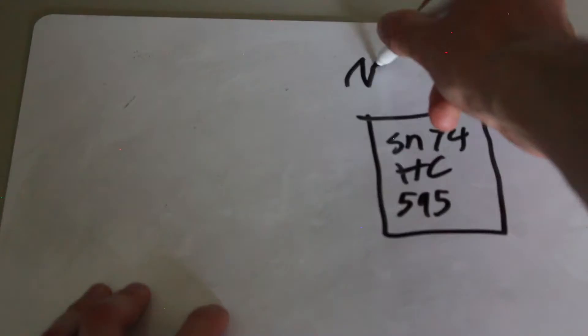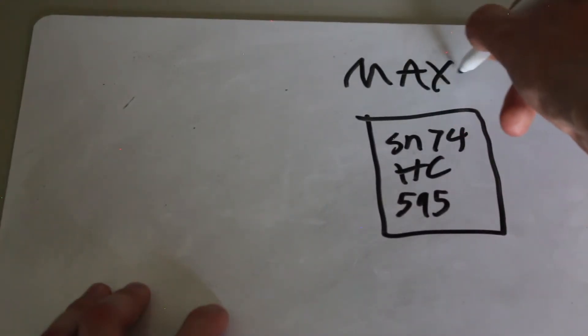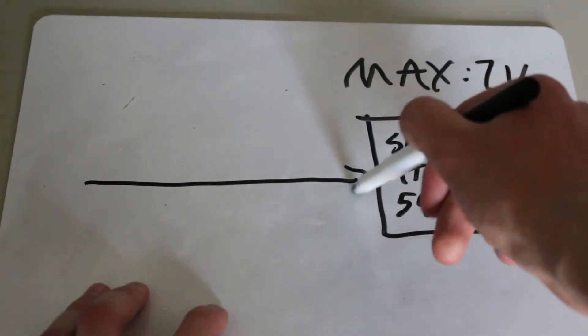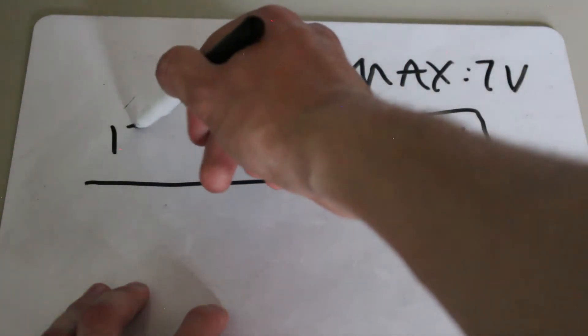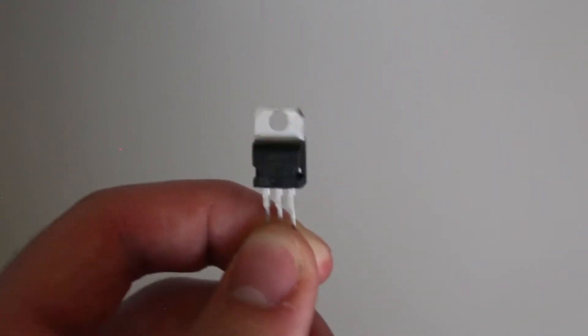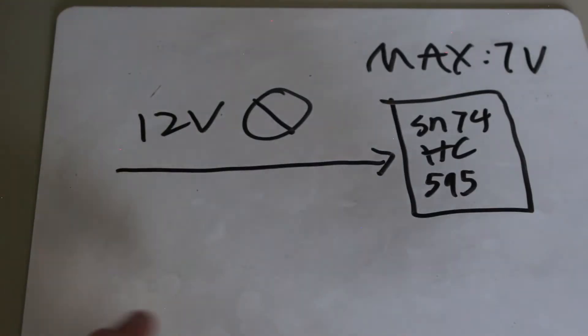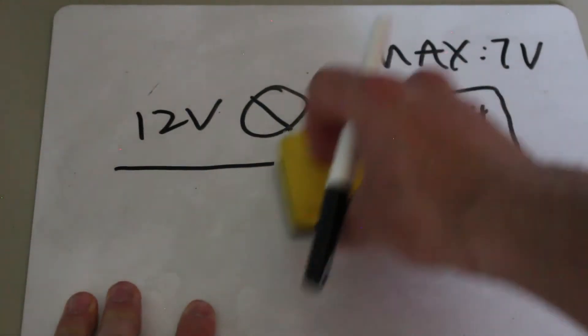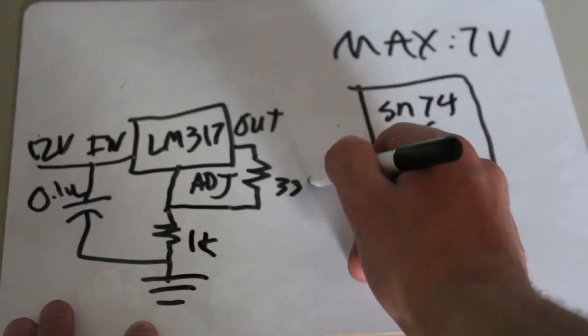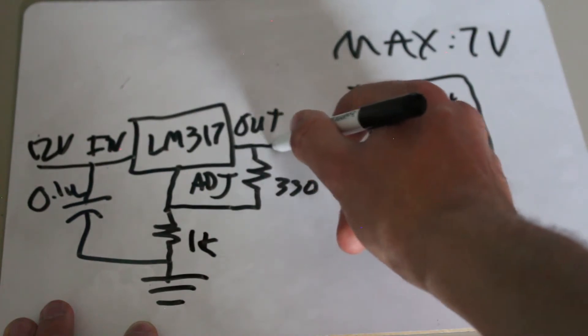One big consideration that we will have to make, however, is that the maximum supply voltage of the shift register is only 7 volts, so we will have to step down the input voltage. Luckily, I got these LM317 ICs that can regulate the 12 volt input down to 5 volts. So following the typical application schematic and using a 330 ohm and 1K resistor divider, we can generate a 5 volt rail for the shift register.